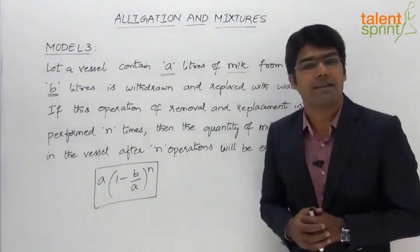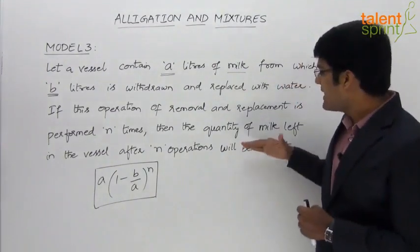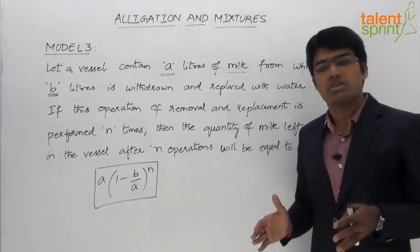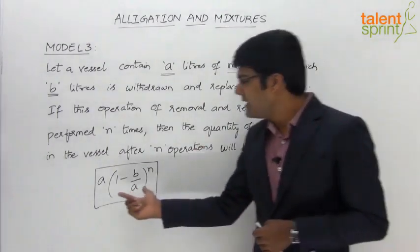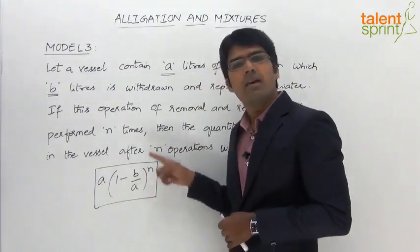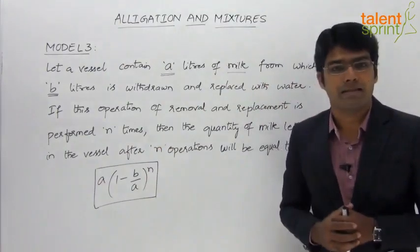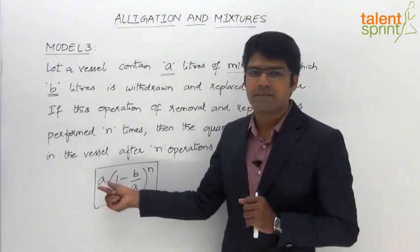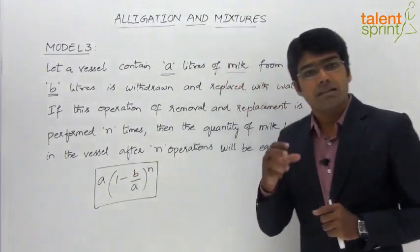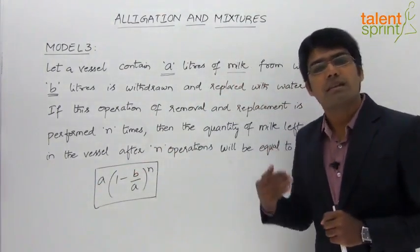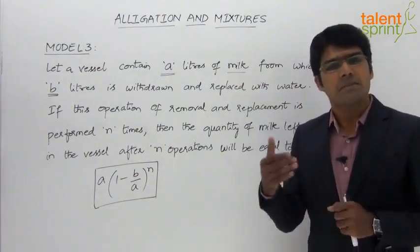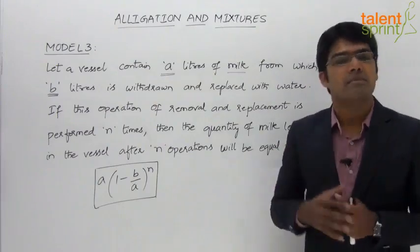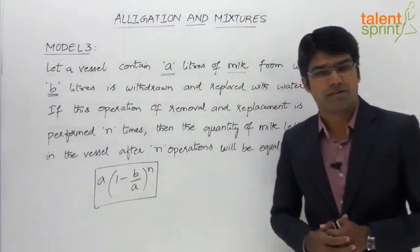This operation is repeated n times. To find out the quantity of milk left in the complete mixture after n operations, we use the formula A into (1 minus B by A) whole to the power of n. Here, A is the initial quantity of milk or the capacity of the vessel, B is the amount withdrawn and replaced in the first instance, and from the second instance onwards B becomes the amount of mixture removed and replaced with pure water. And n is the number of operations.